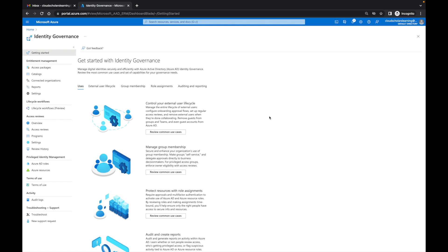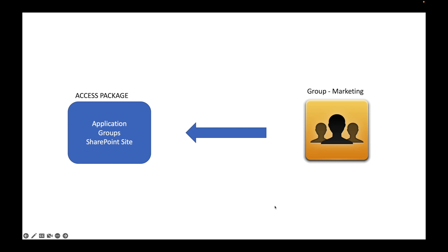So to start off, let's talk about what we're going to do here. As I mentioned, access packages give your users ability to access resources. If you look on the right, we have a group — it's going to be the marketing group — and that's our scope. Anybody within that marketing group, we're going to give an access package. And we're going to give them access to an application, and I'll show you exactly how that works through access packages within identity governance.